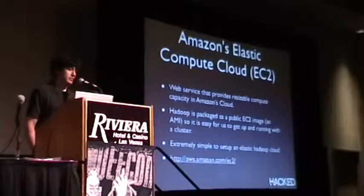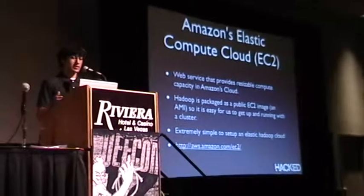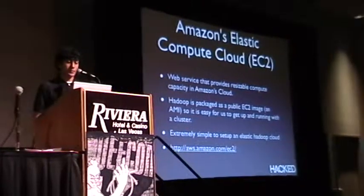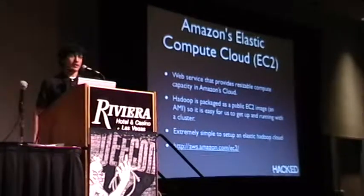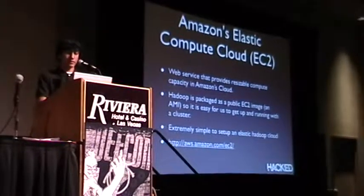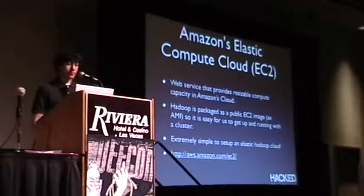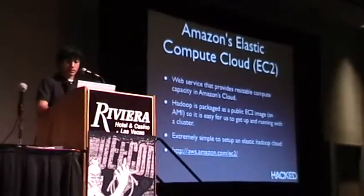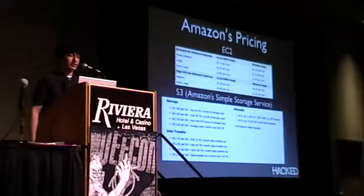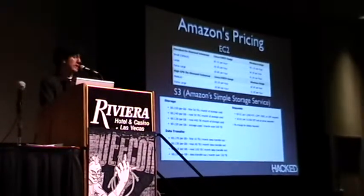This is Amazon's EC2 — Elastic Compute Cloud. They have a web service where you can purchase a resizable compute cloud in their data center. Hadoop is packaged as a public EC2 image, so it's really easy to set up: you go to the web page, choose how many nodes you want in your cluster, click Hadoop, click load, and you're in Hadoop and can start running jobs. For pricing, they charge 10 cents per hour for a basic small Linux node — per node, so 100 nodes would be 10 cents times 100 — plus storage costs for accessing your data.